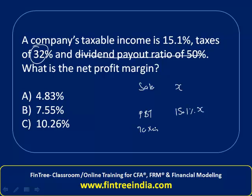So let's calculate 32% of 15.1% of X: 15.1 × 0.32 gives us 4.832X. Once we reduce the taxes, the profit after tax would be 15.1 minus 4.832.